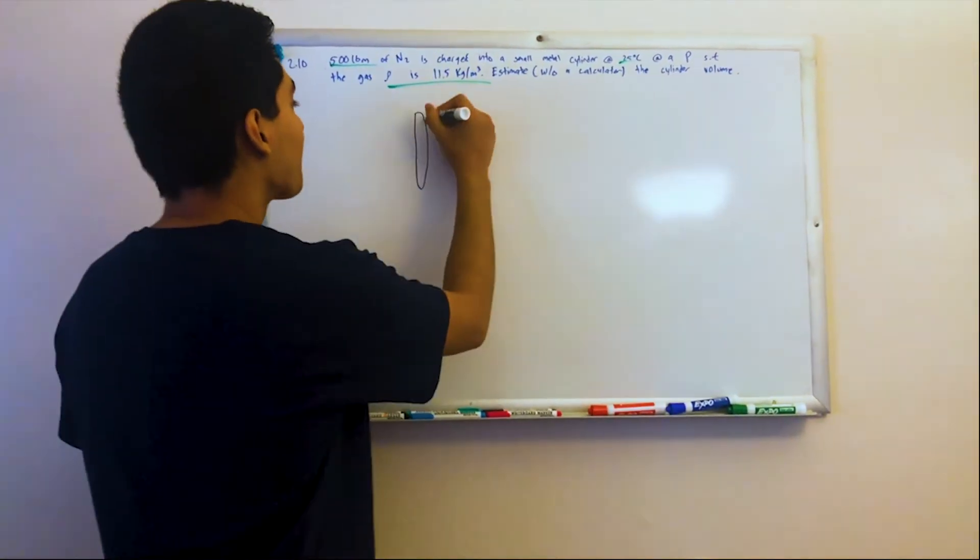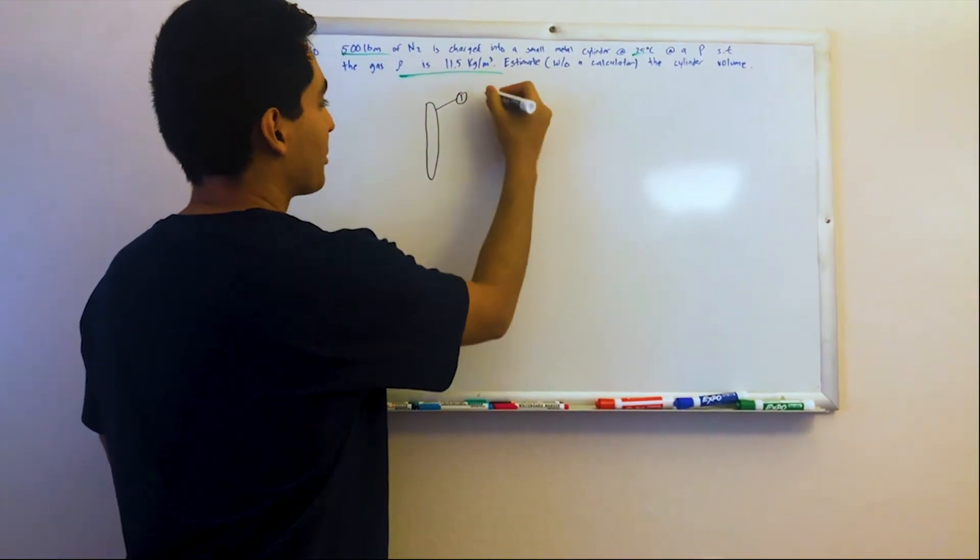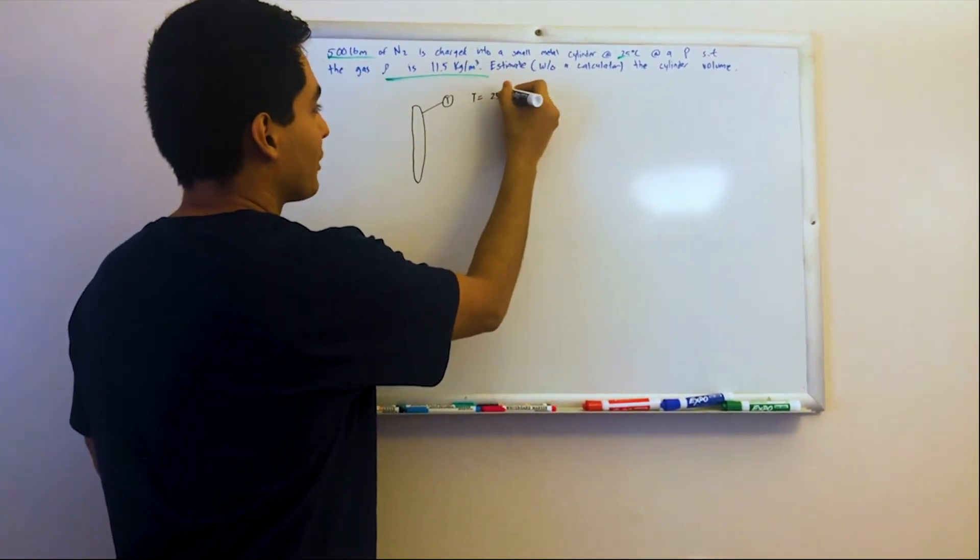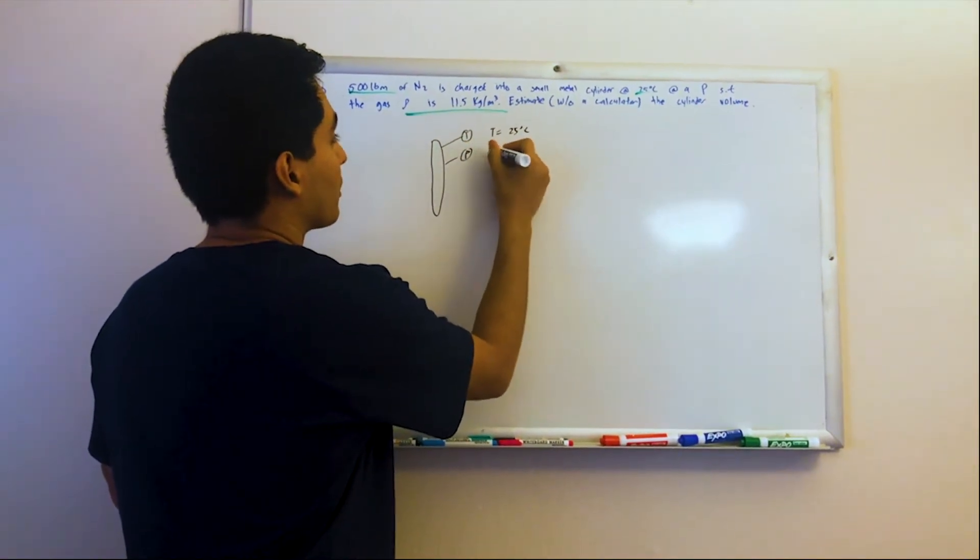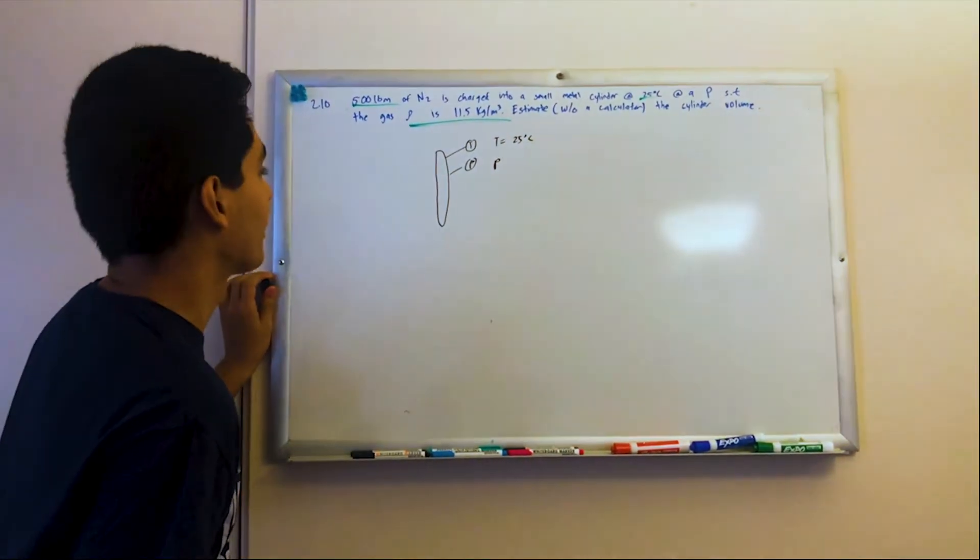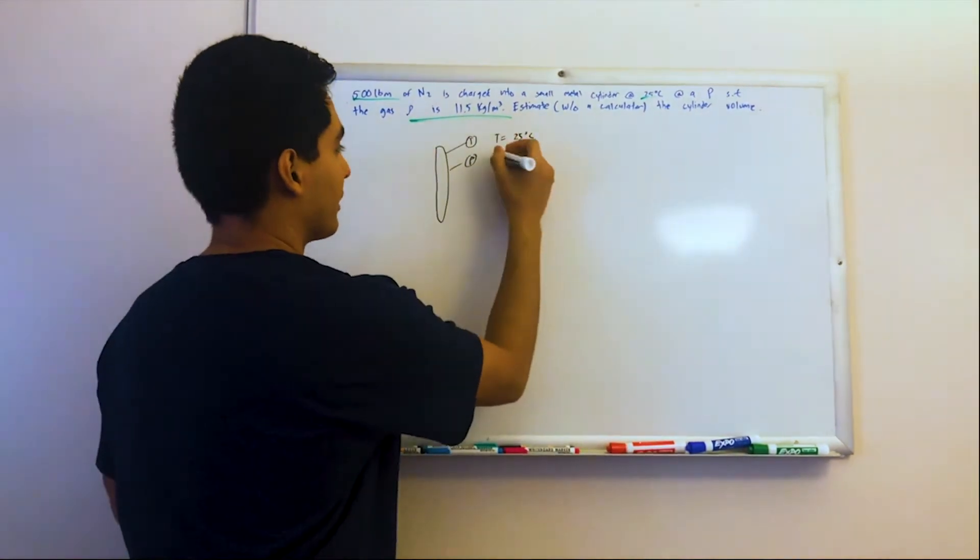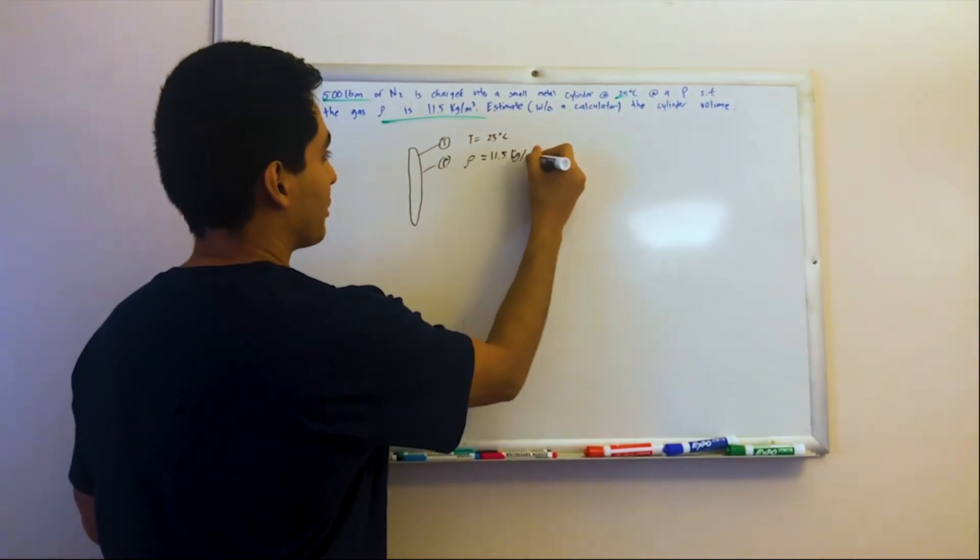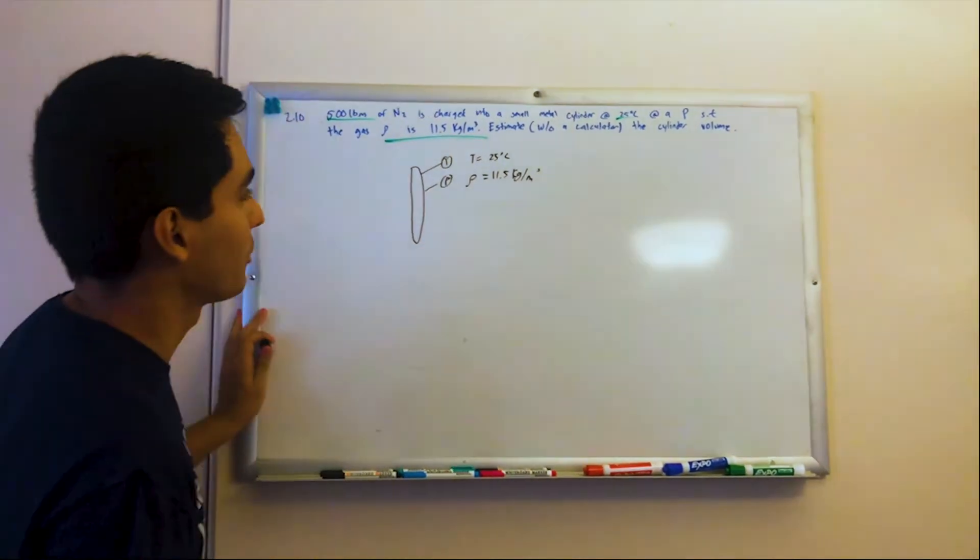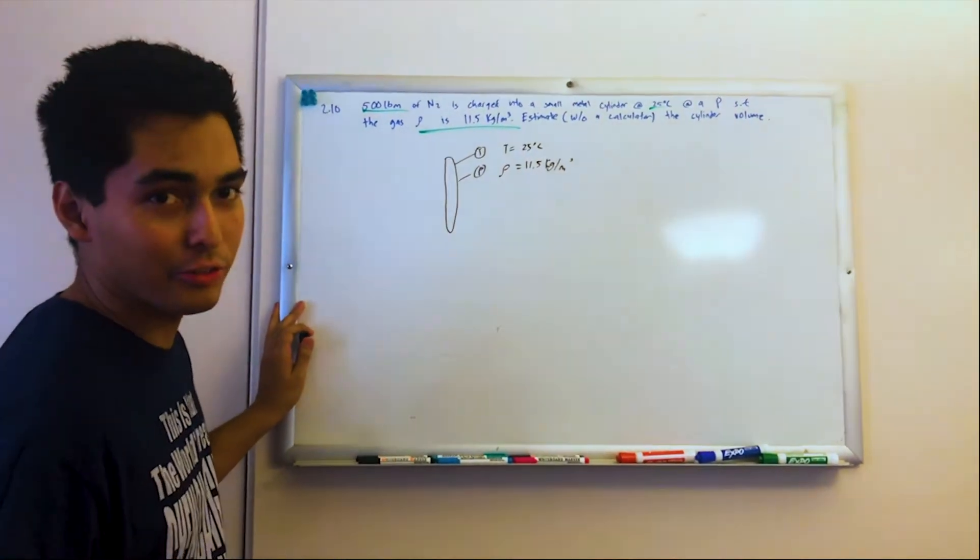The temperature, people look at a little temperature probe, it's 25 Celsius, and we want to pressure such that the density is actually going to be 11.5 kilograms per meter cubed. And so we want to estimate the cylinder volume.